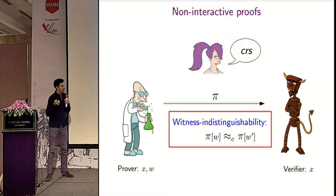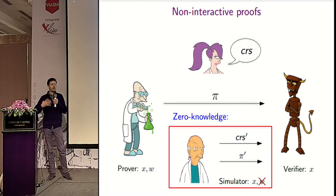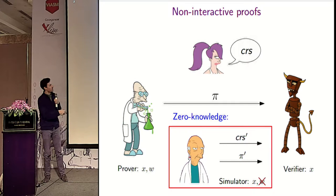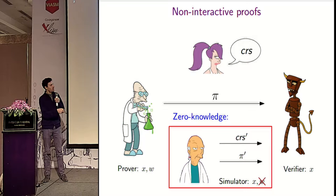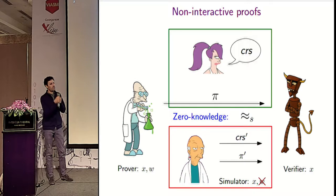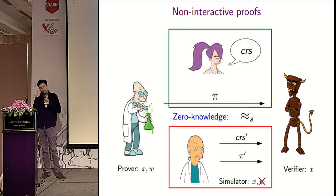A stronger notion is zero knowledge, which formalizes that nothing should be leaked about the witness. This is formalized by requiring that there be a simulator that can compute its own CRS and, using a trapdoor, simulate proofs without access to the witness. The proof system is zero knowledge if the real world and the simulated world are indistinguishable.